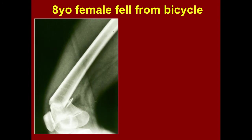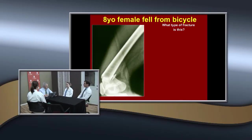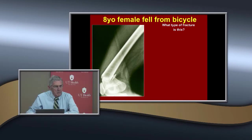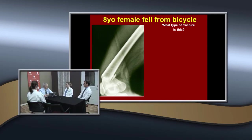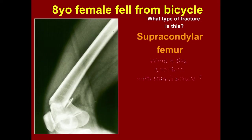Now we have this eight-year-old that fell from a bicycle. What kind of fracture is this? You'd call it a distal femur fracture — apex anterior. But where in the bone? The metaphysis — actually, it's a supracondylar fracture, just like in the upper extremity.